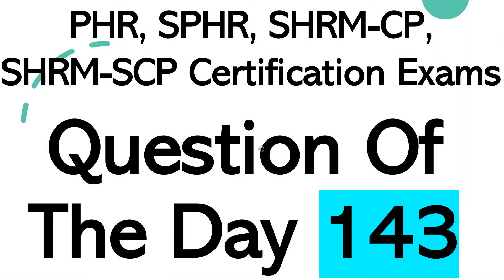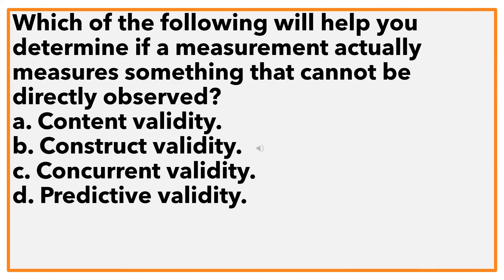Question of the day: Which of the following will help you determine if a measurement actually measures something that cannot be directly observed? A. Content validity. B. Construct validity. C. Concurrent validity. D. Predictive validity.